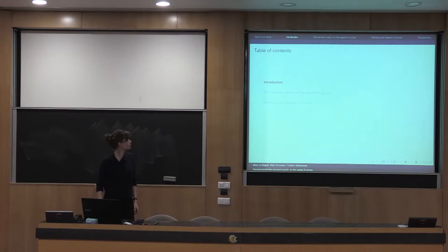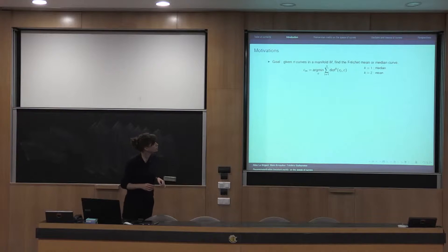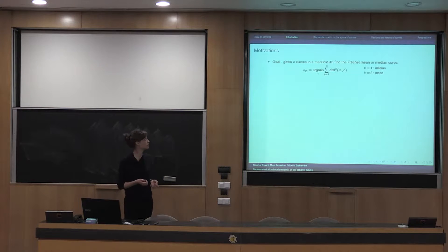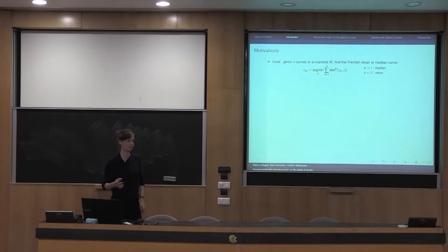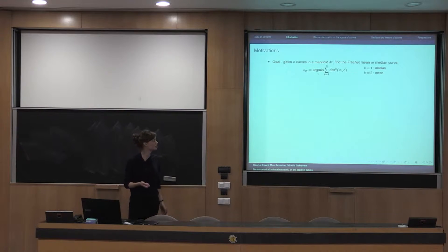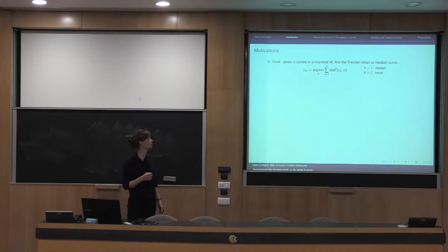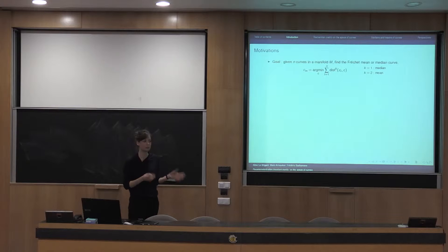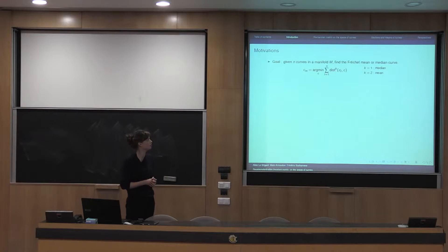Let me start with a brief introduction on our motivations. The goal is, given a certain number of curves in a manifold M, to find the Frechet mean or median of these curves. In the sense of Frechet, this means we're looking for the curve that minimizes the sum of squared distances to each curve that we want to average.